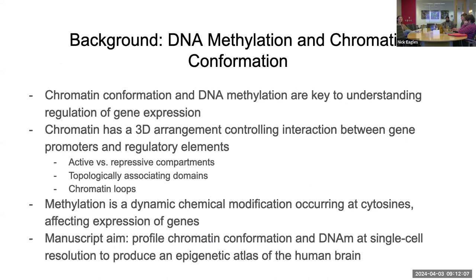There are some key concepts to understand what this paper was talking about. It was really focused on two things: DNA methylation and chromatin conformation. Both are critical to understanding epigenetics as a whole. The goal for this manuscript was to profile these two different types of information at single-cell resolution and across many different brain regions — really to form an epigenetic atlas of the human brain.